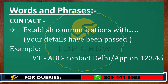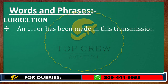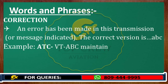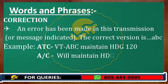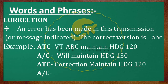Correction means an error has been made in this transmission or message indicated. The correct version is to follow. For example, Victor Tango Alpha Bravo Charlie, maintain heading 120. Will maintain heading 130. Correction, maintain heading 120. Will maintain heading 120. Victor Tango Alpha Bravo Charlie.